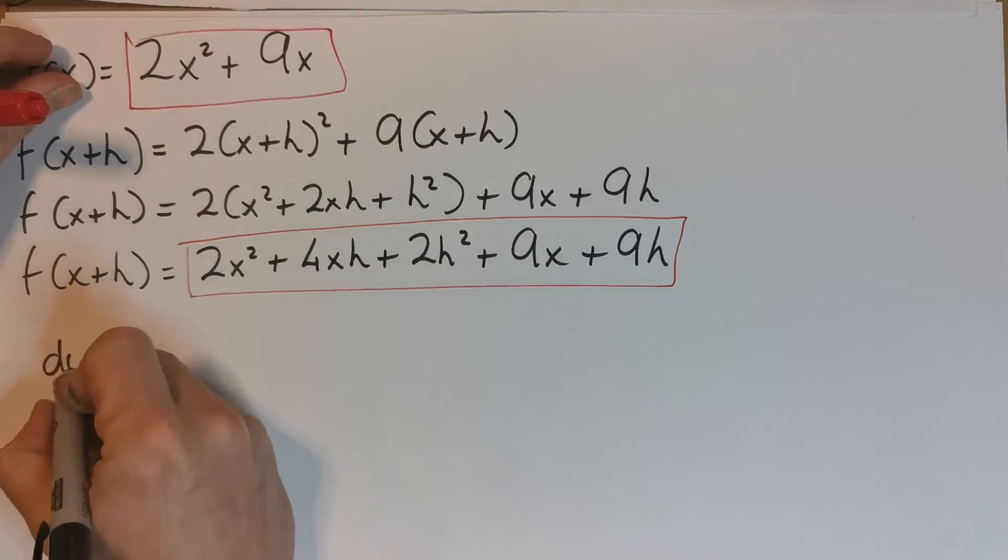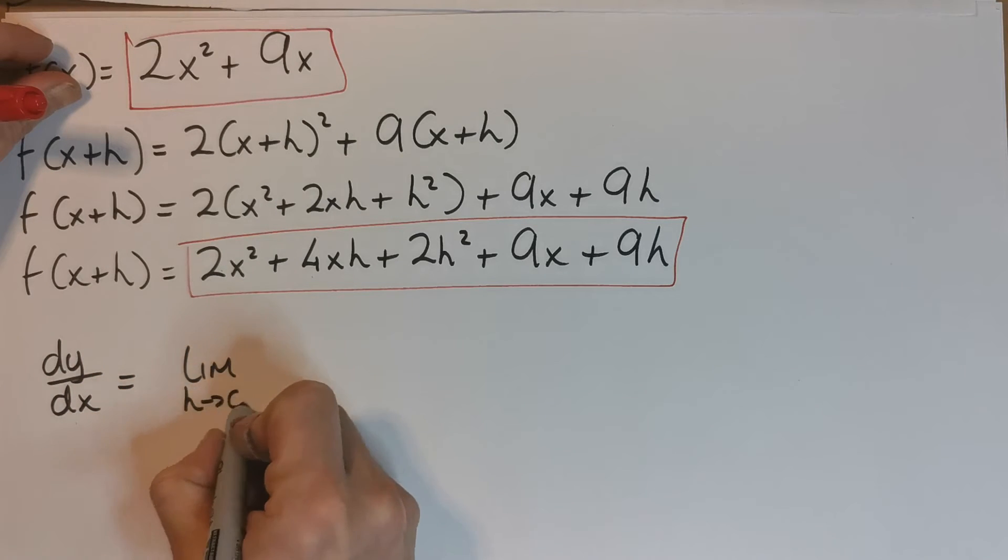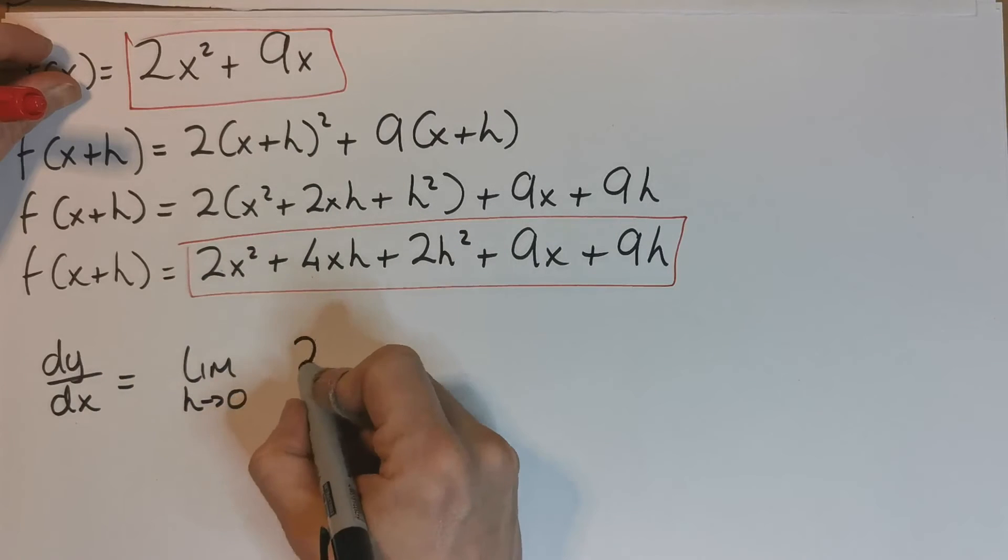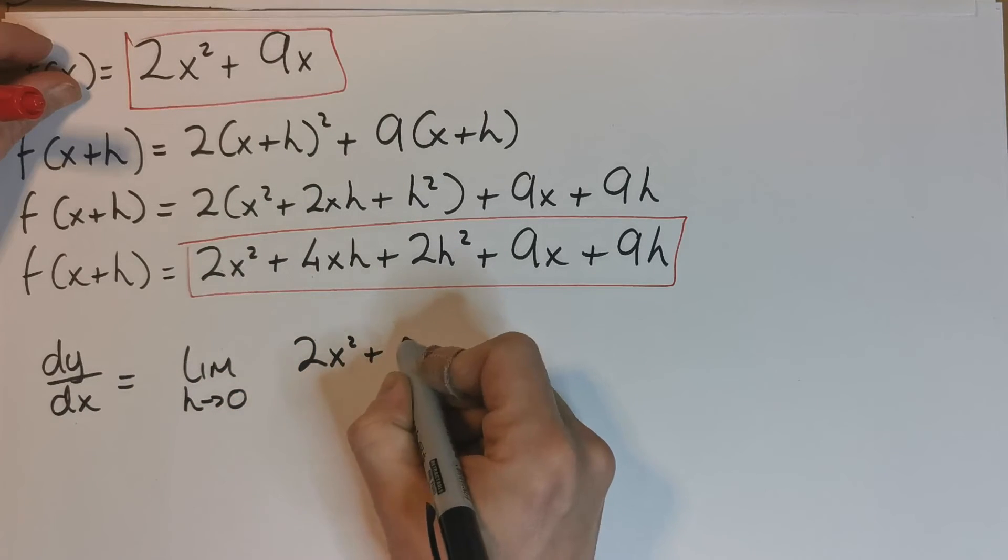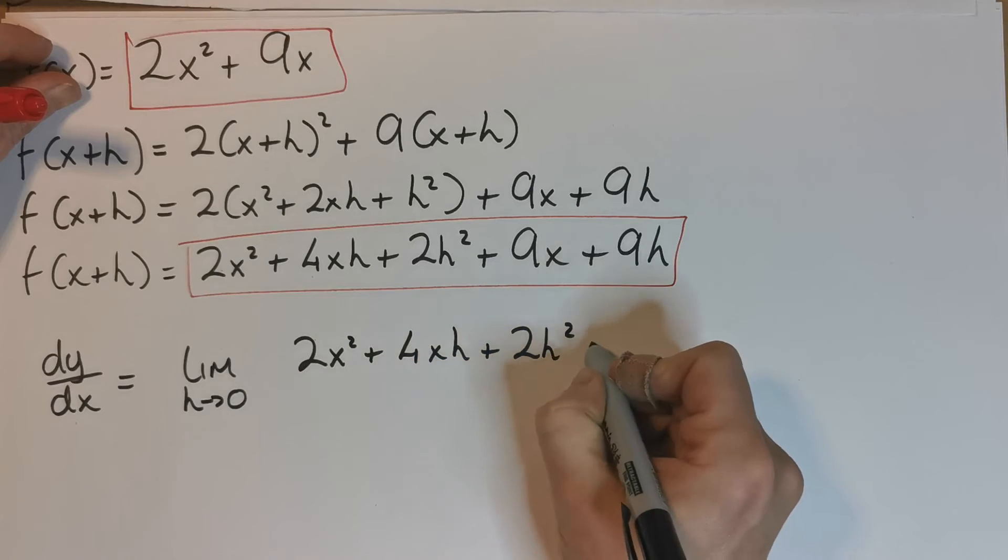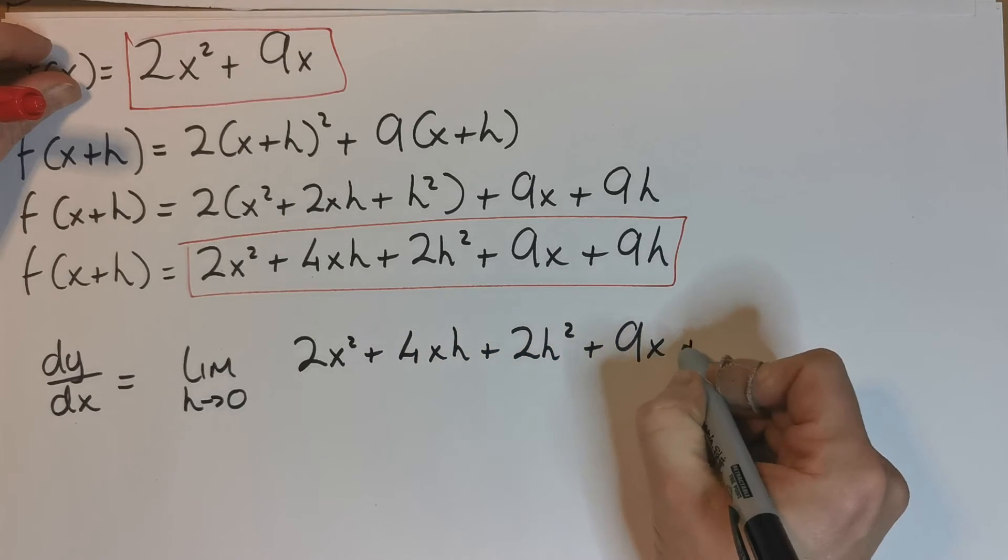Okay, so looking at our formula, it says that the derivative dy/dx is going to be equal to the limit as h tends to 0 of, firstly, f(x+h), all this stuff here: 2x² + 4xh + 2h² + 9x + 9h.